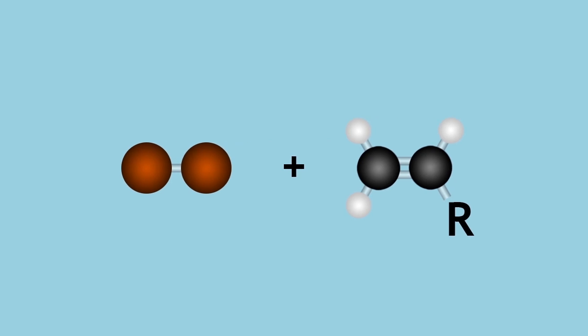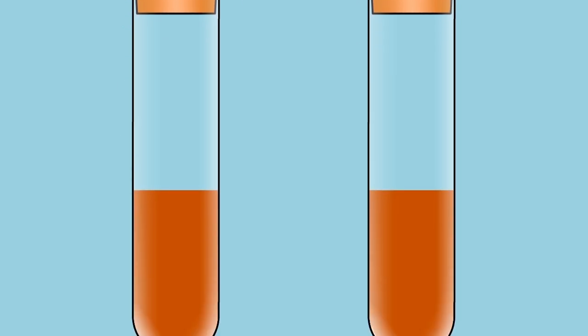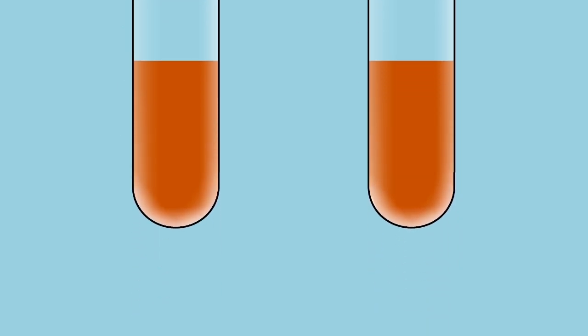Now, at the end of this video, you should be able to explain how a halogen reacts with an alkene in an addition reaction, and how the reaction of bromine with an alkene is the test for the presence of the carbon-carbon double bond.